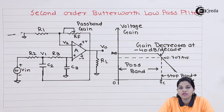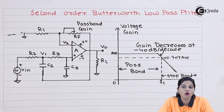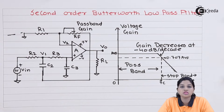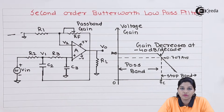The pass band is a band of frequency which is allowed by the filter, whereas the stop band is a band of frequency which is stopped, blocked, or attenuated by the filter. In case of a low pass filter, only the lower band is the pass band. In the pass band, the gain of the filter is equal to 1 in the ideal case, and equal to AVF depending upon the component values in a practical filter.